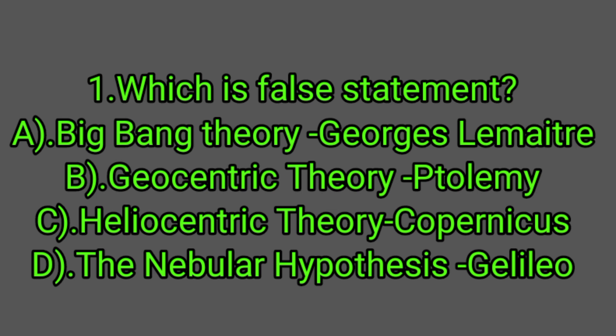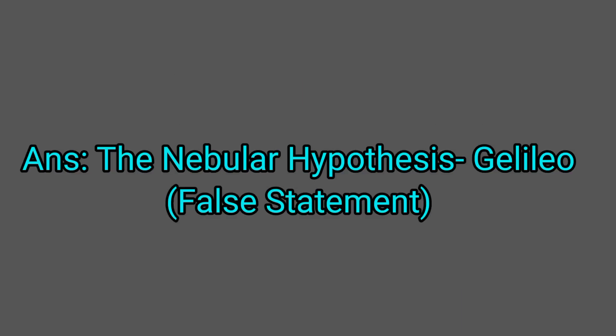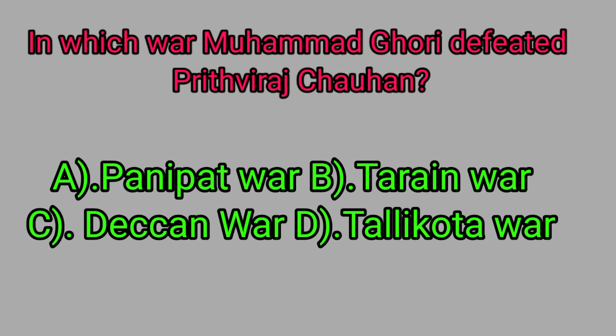The wrong answer is D — Nebular Hypothesis attributed to Galileo. These statements are found on page numbers 6 and 8 of the 7th class social textbook. In which war did Mohamed Gori defeat Prithviraj Chauhan?